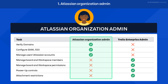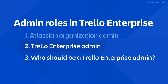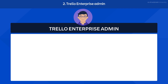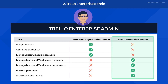An Atlassian Organization Admin may or may not also be a Trello Enterprise Admin. Trello Enterprise Admins play a critical role in the ongoing use of Trello Enterprise. They have complete access to Trello Enterprise settings and permissions, and they oversee them across your whole enterprise. These settings include member permissions, board settings, and approved power-ups and file-sharing tools.